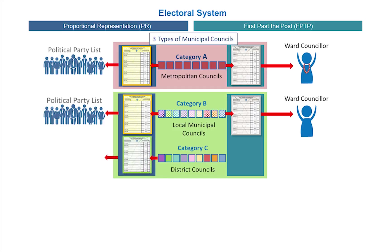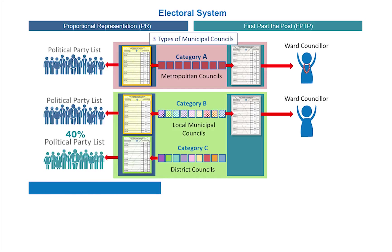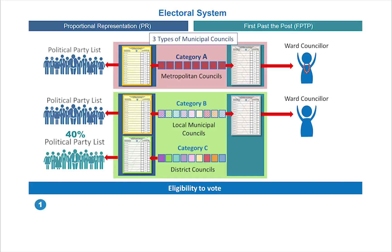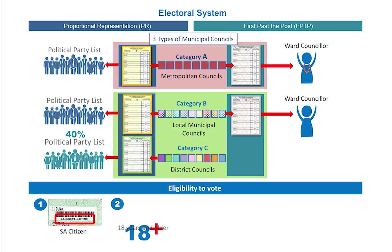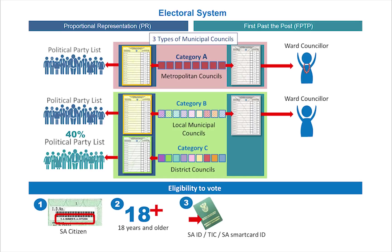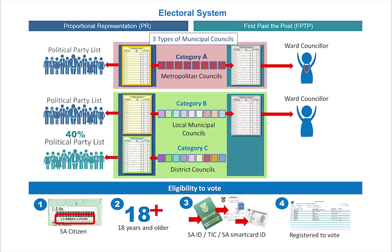And the green ballot is to vote for 40% of councillors from political parties to the larger district council. The four criteria which make a person eligible to vote are: being a South African citizen, being 18 years or older, having a South African ID, TIC or smart card ID, and being registered to vote.